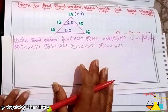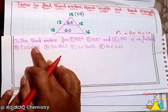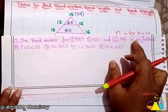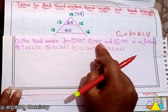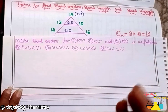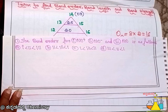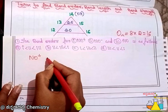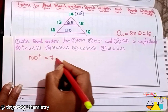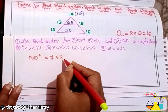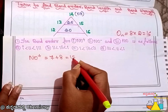First question: the bond order for NO+, NO−, and NO is as follows. For NO+, nitrogen is atomic number 7 and oxygen is atomic number 8, so 7 plus 8 equals 15 electrons.